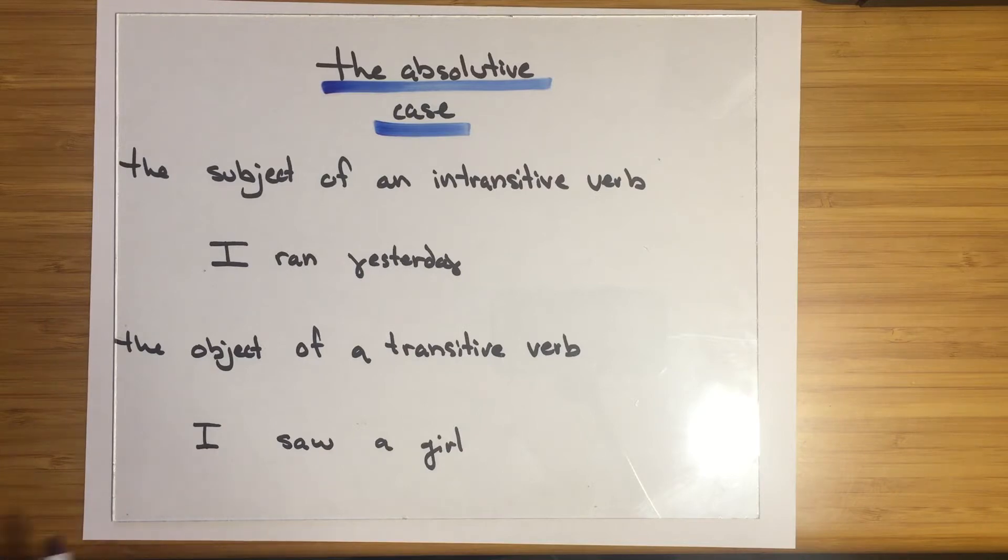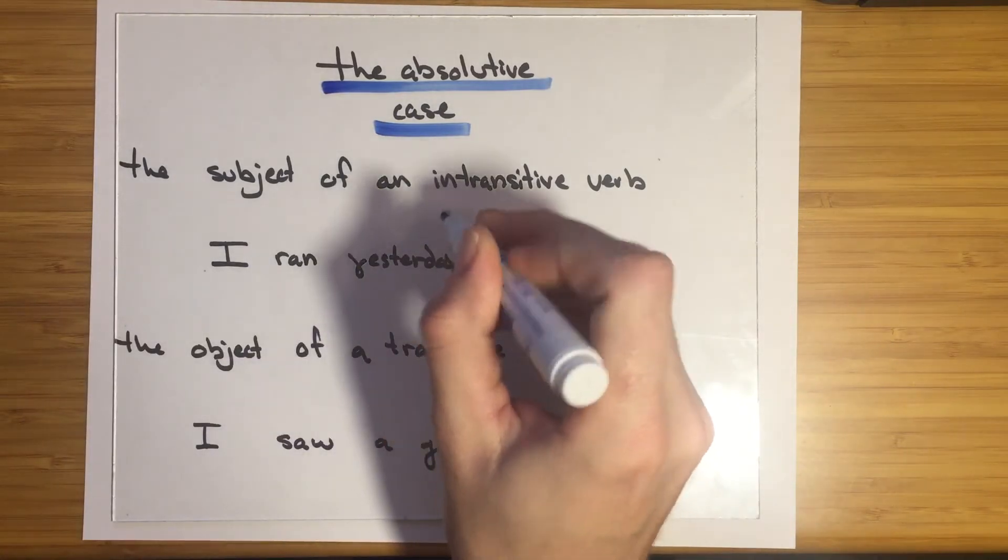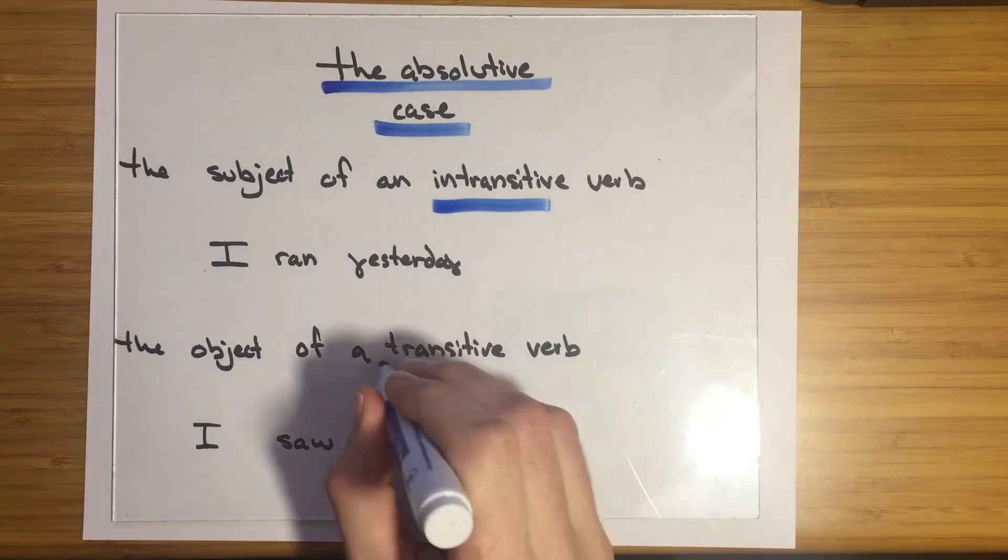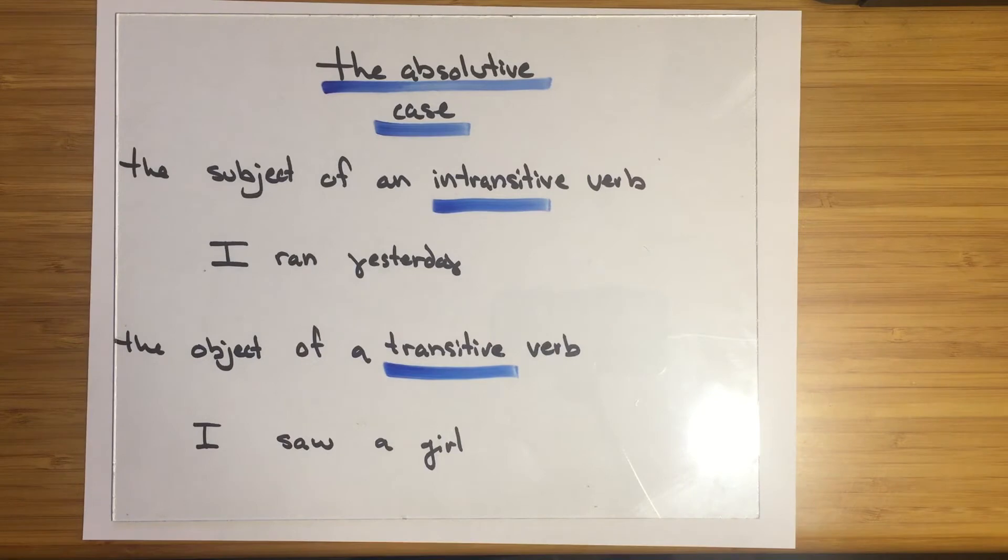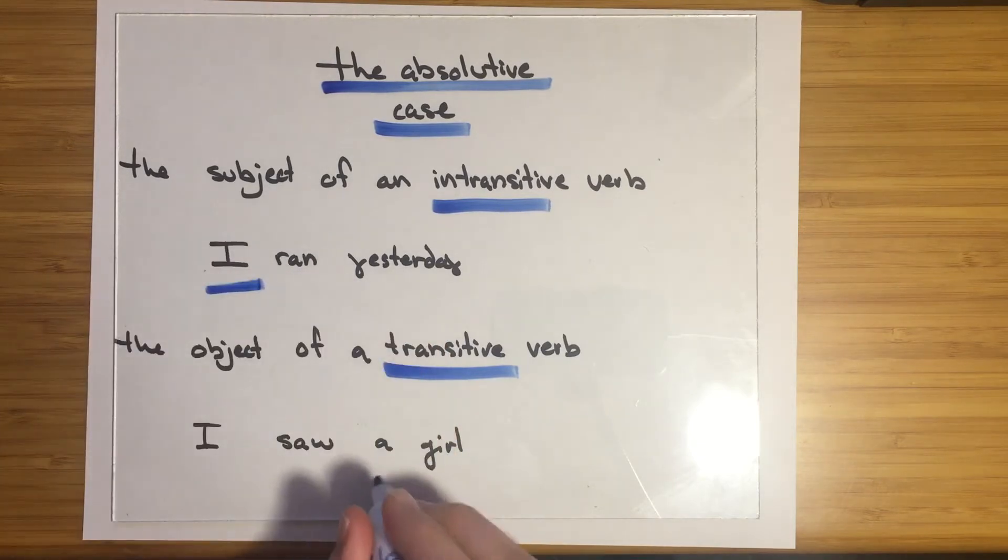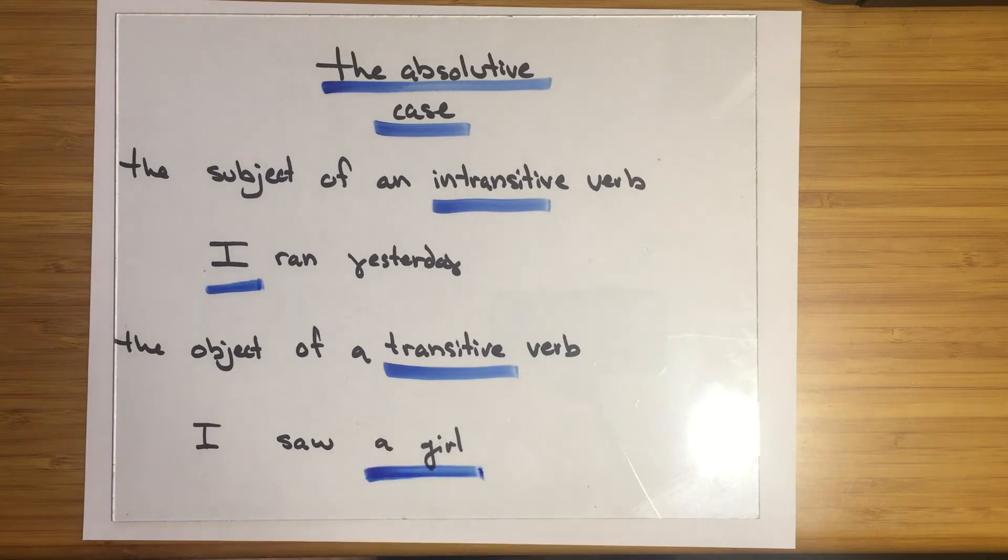The absolutive case can be the subject of an intransitive verb or the object of a transitive verb. In Western languages, we're not used to seeing these as a group. This can be a little bit weird if you're coming from an English or Latin-based language perspective, that we might group, for example, the subject of an intransitive verb with the object of a transitive verb.